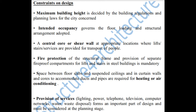Number 3: a central core or shear wall at appropriate locations, especially where lifts, stairs, and services are provided for the transport of people. Number 4, very important: fire protection. Fire protection of the structural frame and the provision of separate fireproof compartments for lifts and stairs in steel buildings is mandatory. Number 5: space between the floor slabs and suspended ceilings, and in curtain walls, to accommodate ducts and pipes required for heating or air conditioning.